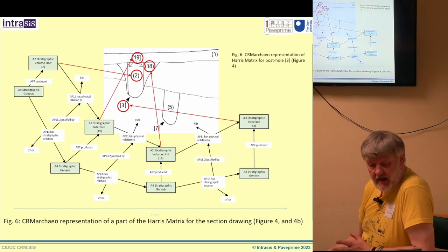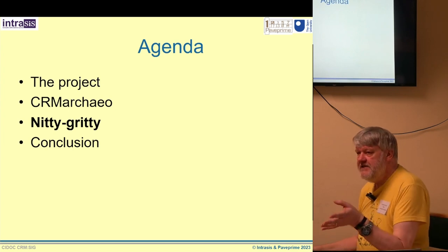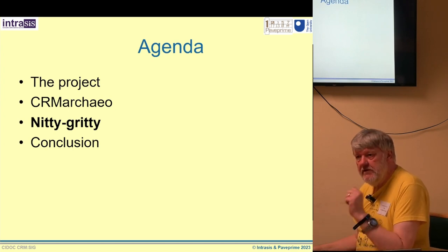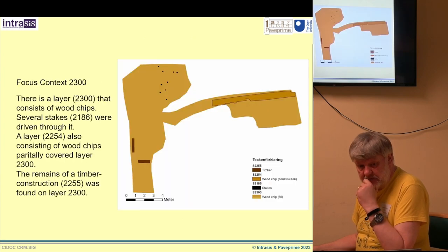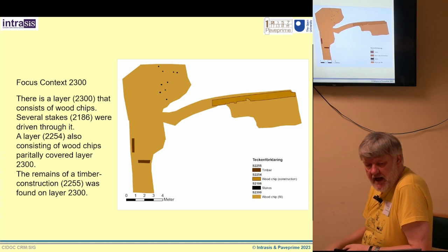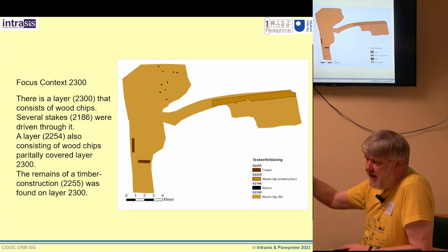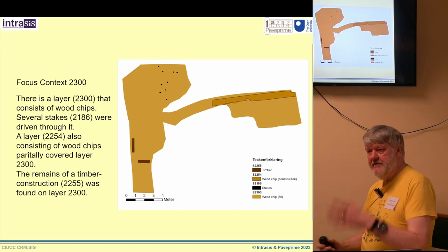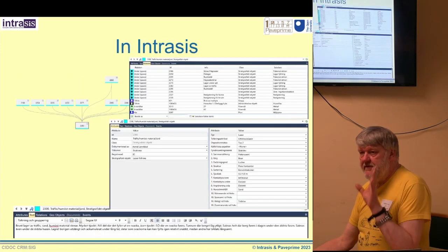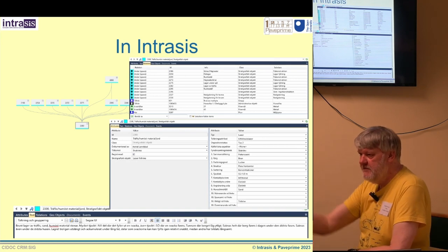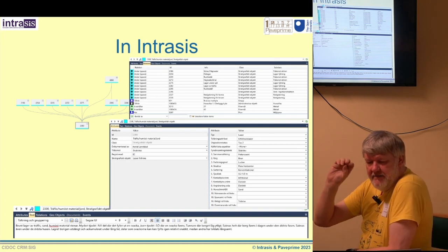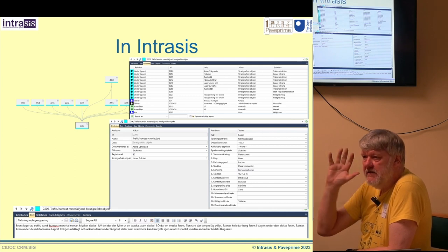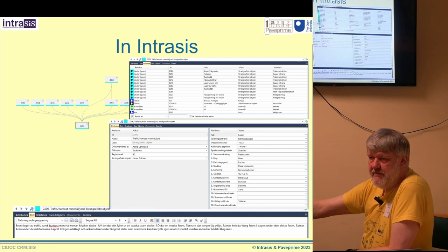So what's the nitty gritty of doing this on real data in Sweden? We're going to look at context 2300, which is a layer of wood chips with stakes driven through it, then another layer of wood chips on top, and then some building foundation elements on top of that. These are genuinely Swedish records pulled from Intrasys — this is what it looks like in Intrasys in Swedish. It's a template-based database which converts into fourth normal form under the bonnet, and it allows you to record stratigraphic descriptions of the earth and relationships.